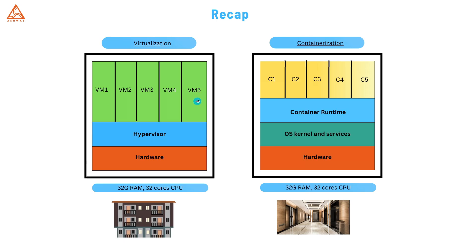This was a huge step forward, allowing for better hardware utilization than just running one application on one giant server. But it comes with its own limitations. In containerization, we share the OS kernel and services, so the physical box has only one operating system. You then install a special software called a container runtime — it could be Docker, Podman, containerd, or anything — and each container runs on top of this runtime with your application sitting inside one of these containers.